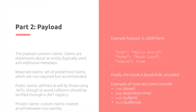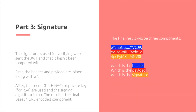For the payload, we contain the claims — statements about an entity, typically the user or additional metadata. There are three types: reserved claims, which are predefined; public claims, which are defined at will but should avoid clashes, verifiable through the JSON Web Token registry; and private claims, which are simply claims created at will between the two parties. Examples of standard reserved claims include issuer, expiration date, and subject.